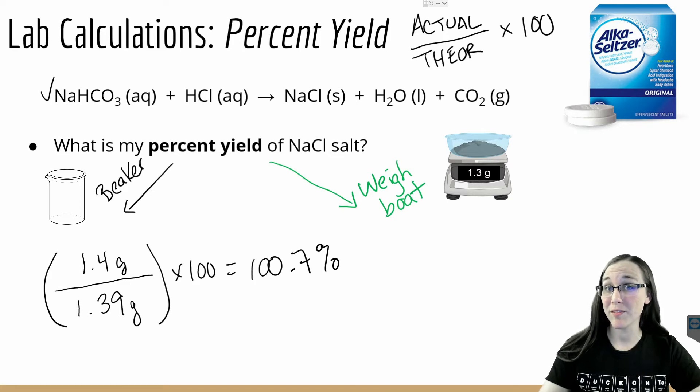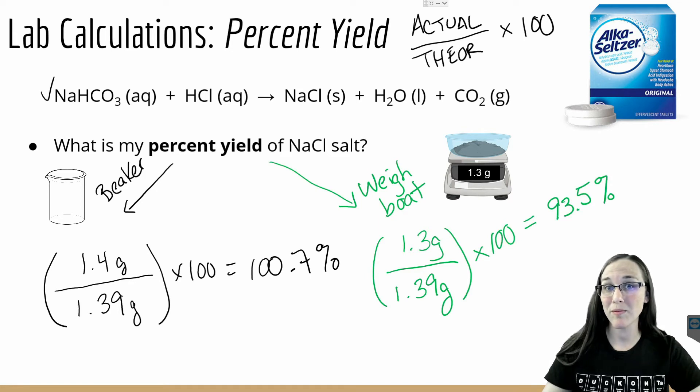Or if I did my calculations based off of the weigh boat value, I would take 1.3 grams divided by 1.39, which was my, again, theoretical calculated from the limiting reactant, times 100 to give me 93.5 percent yield.